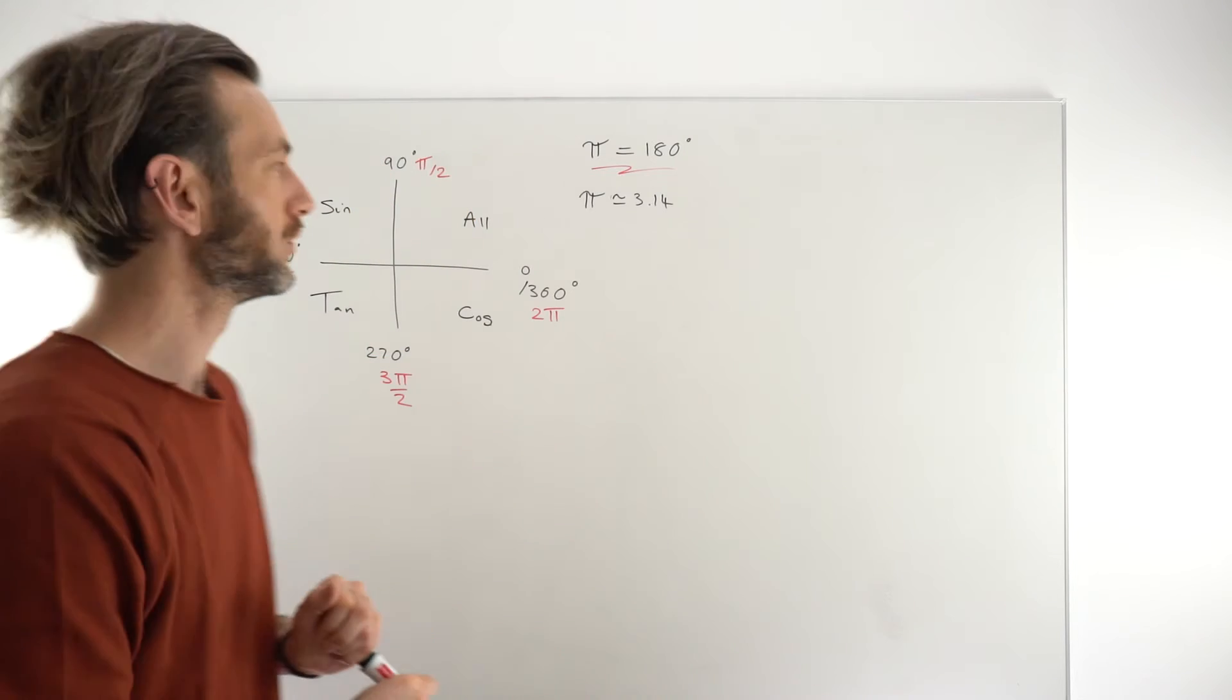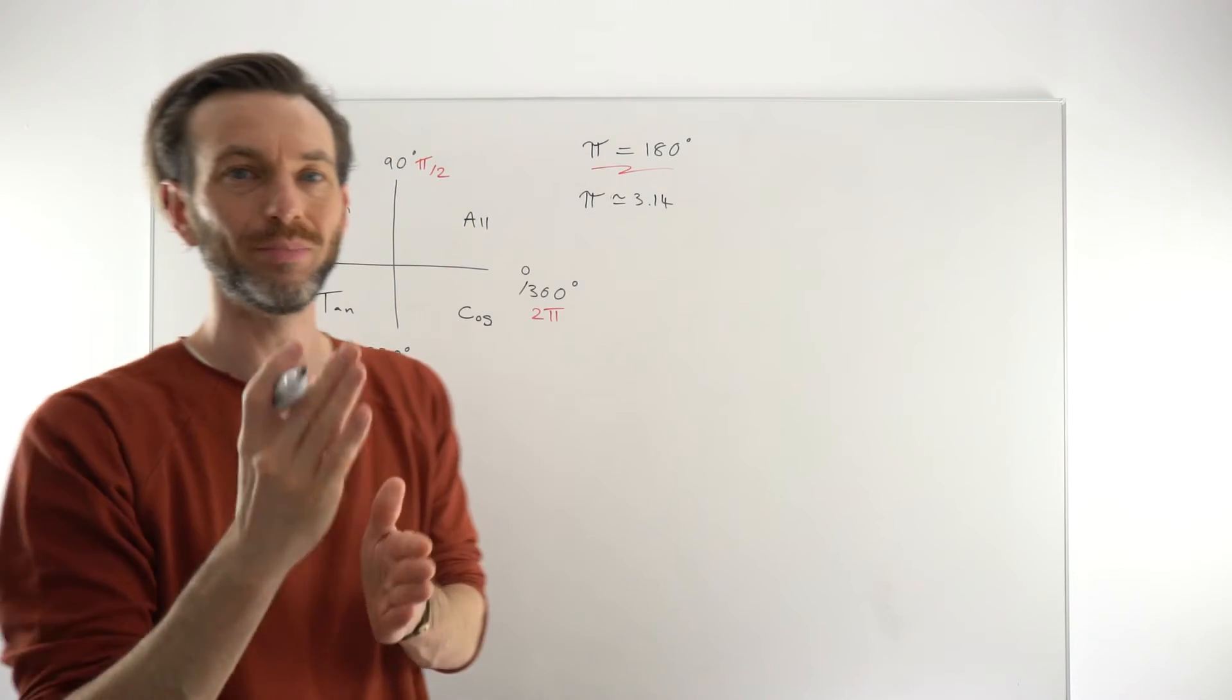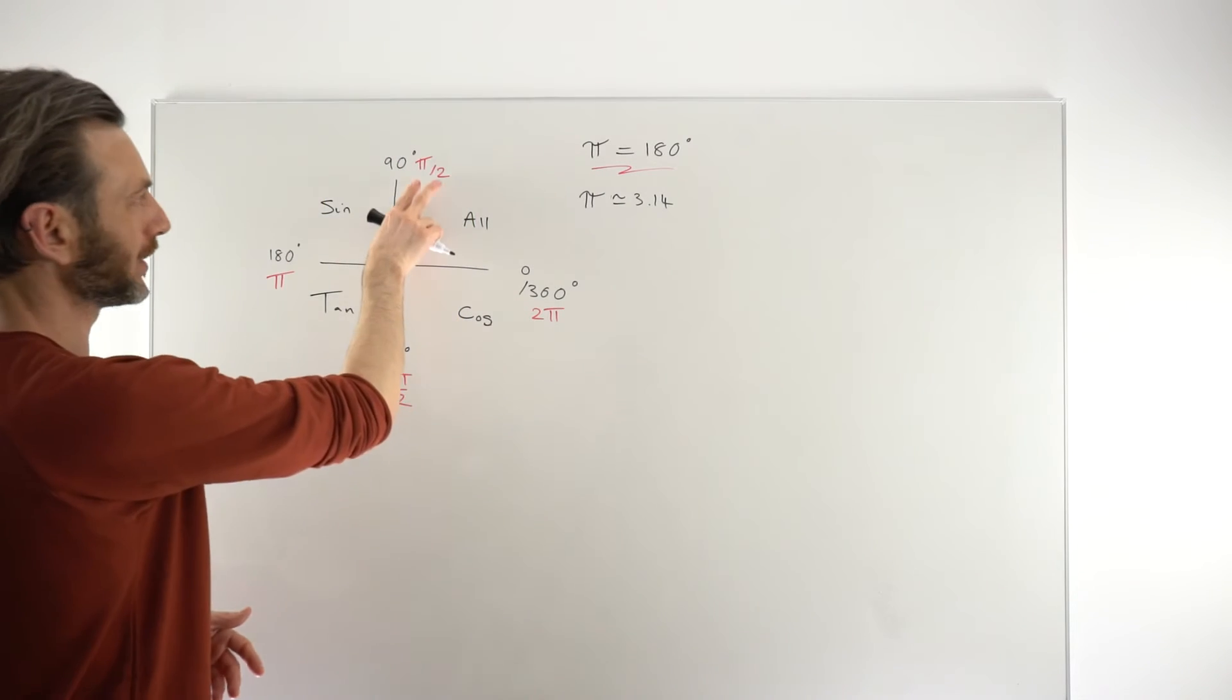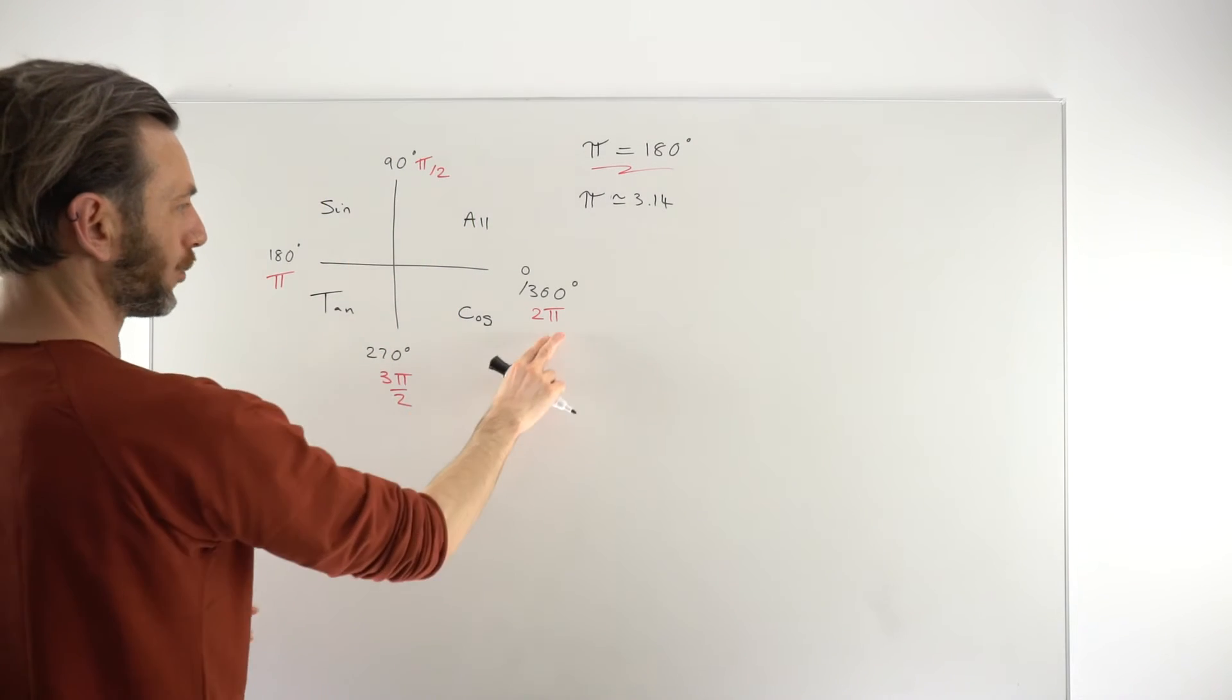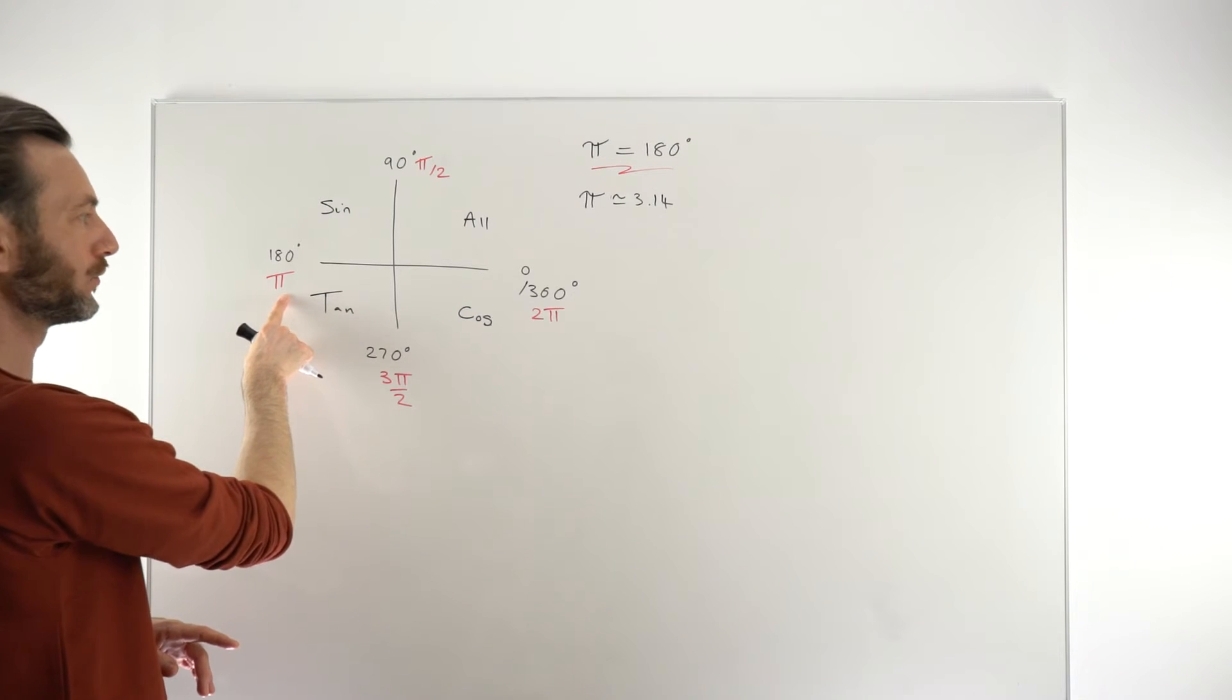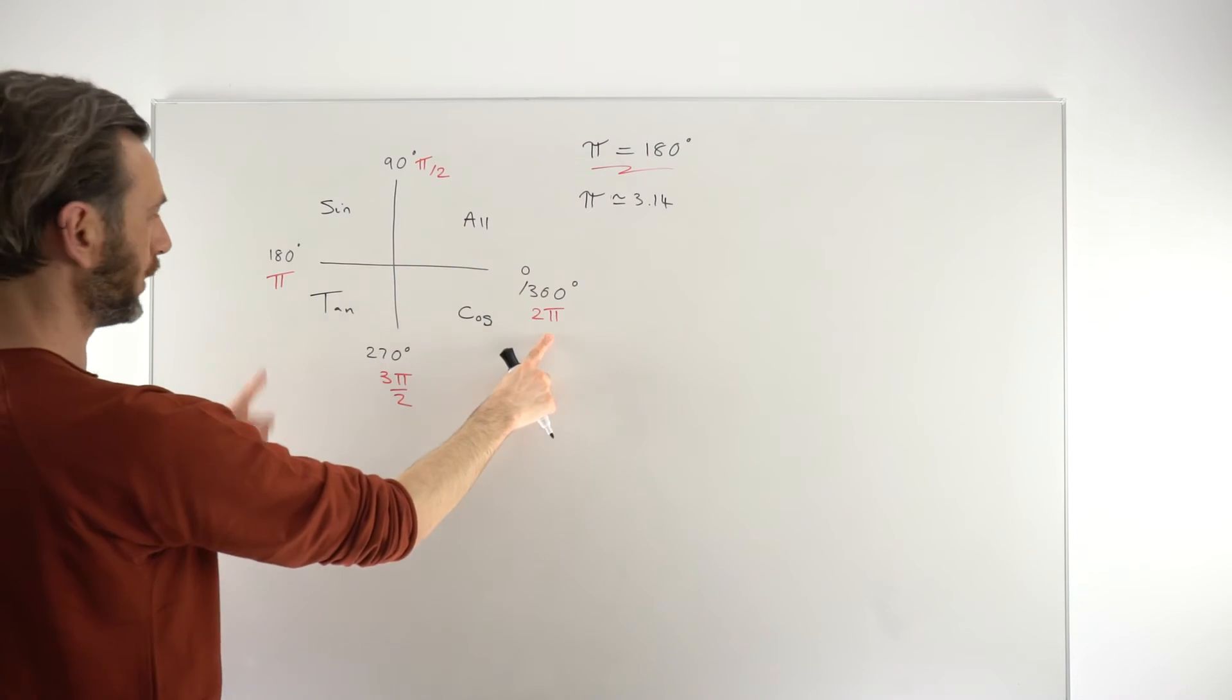But if we had, say, 91 degrees, that wouldn't be π divided by something. That would be a decimal. So although we write these in these compact π forms, this is still 3.14. This is 3.14 radians. This would be half of that, and this is twice that.